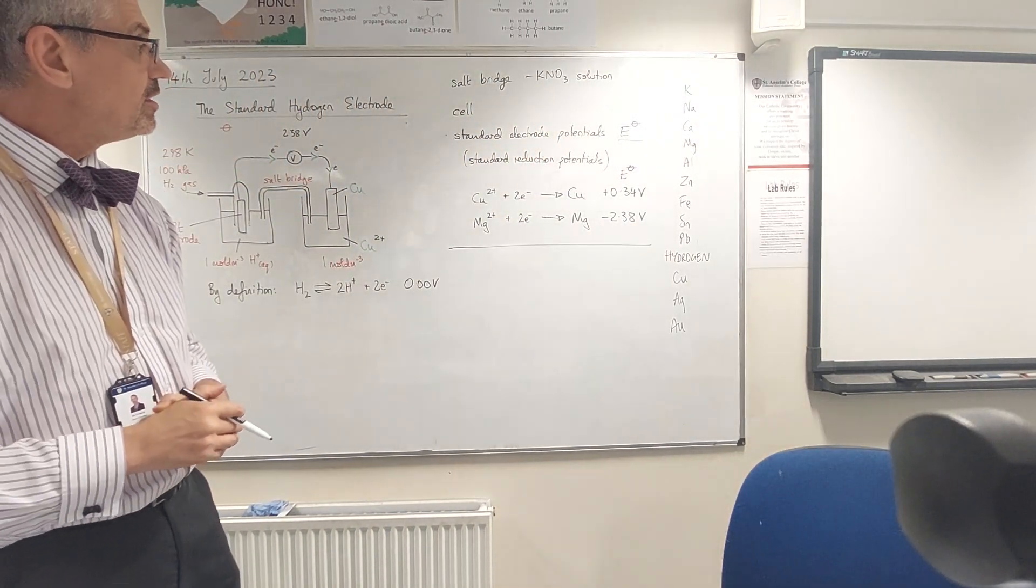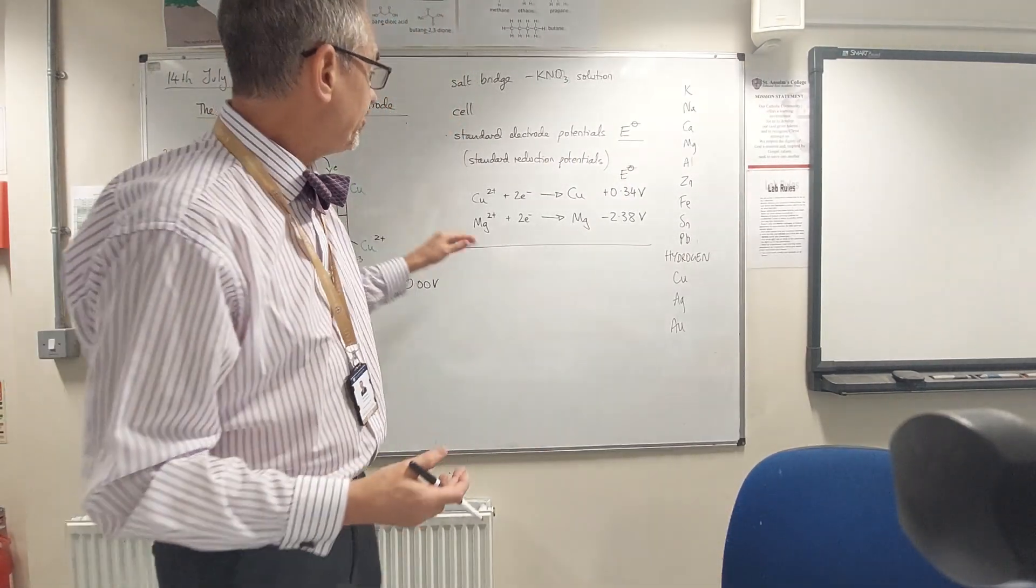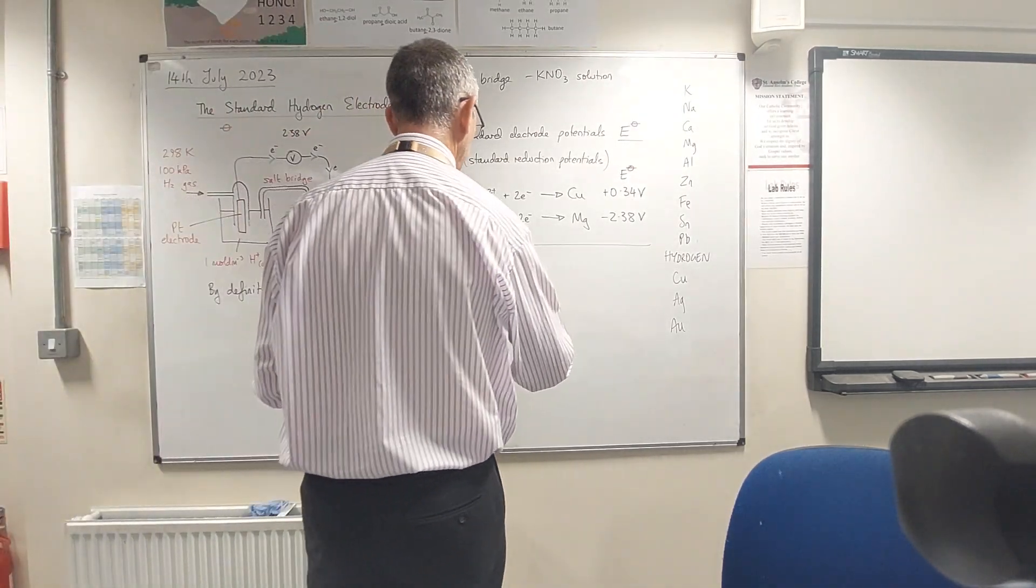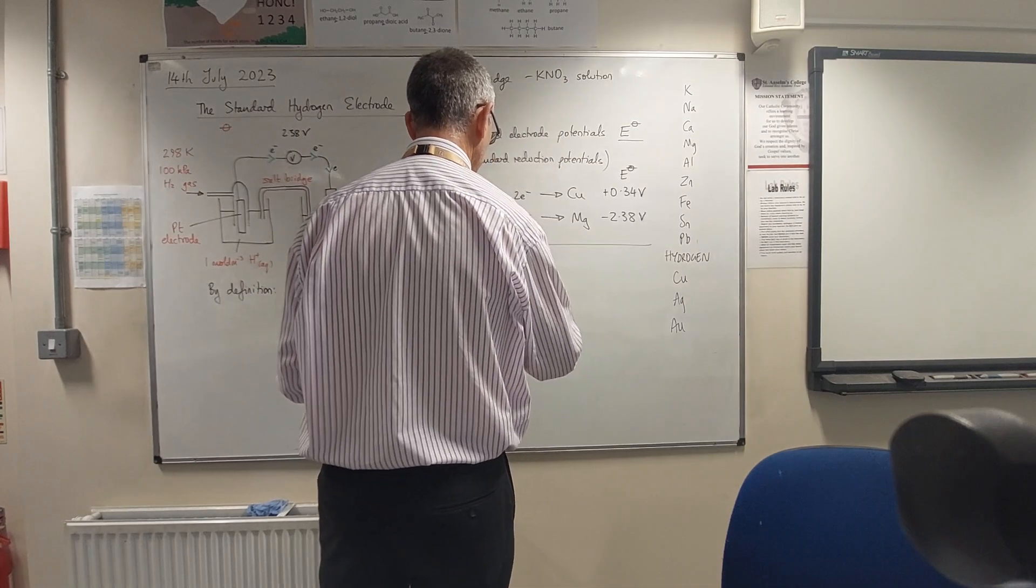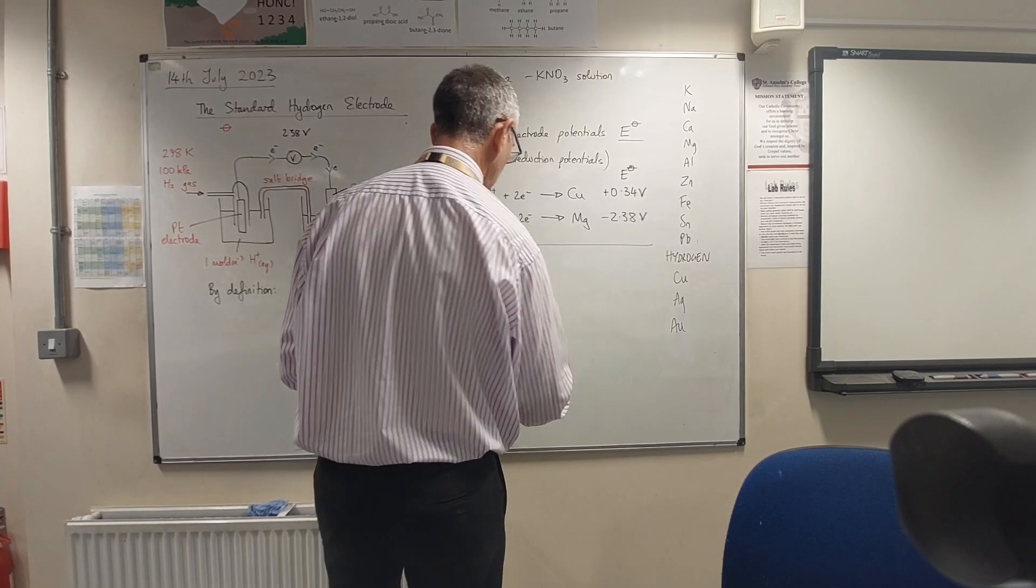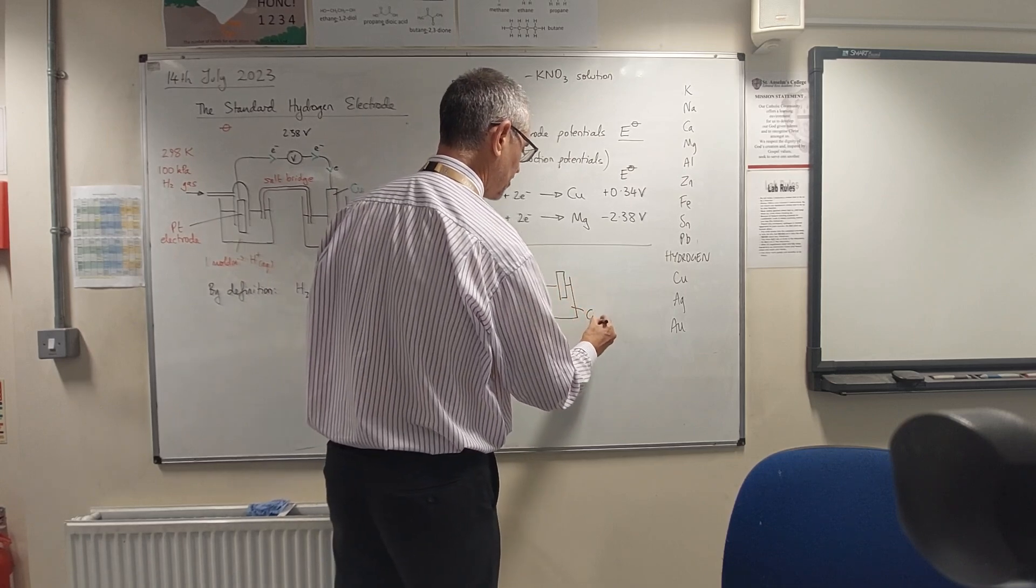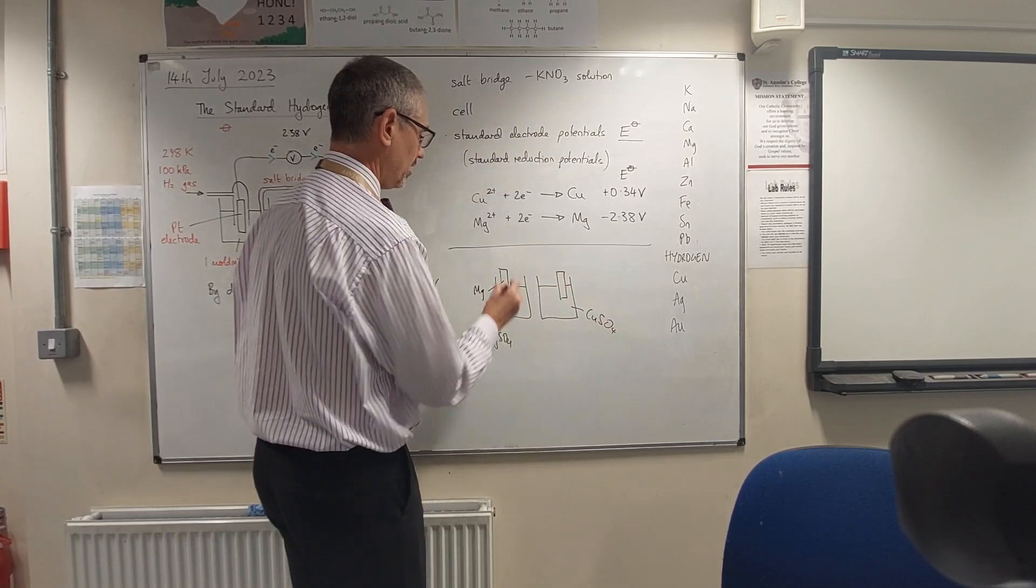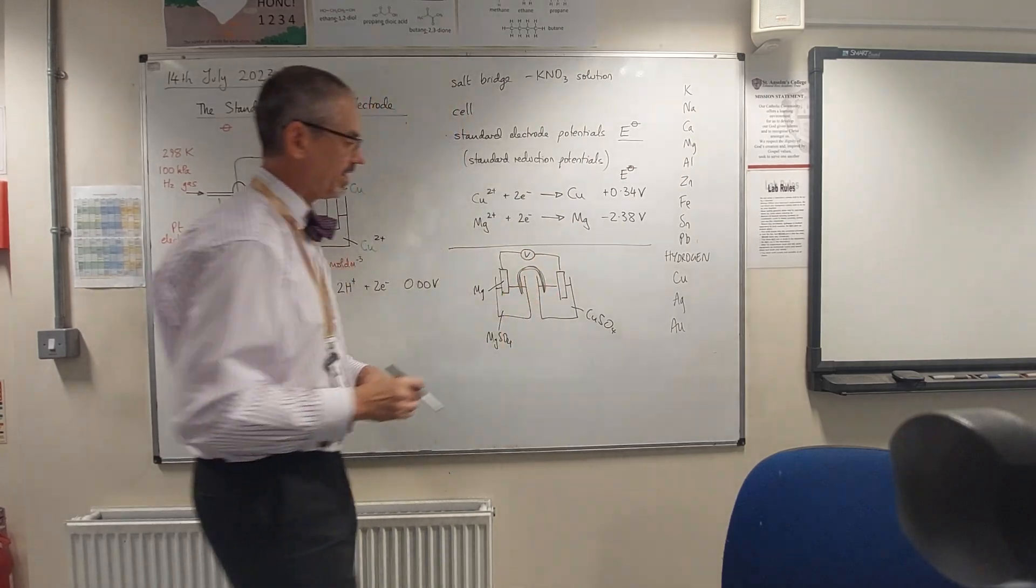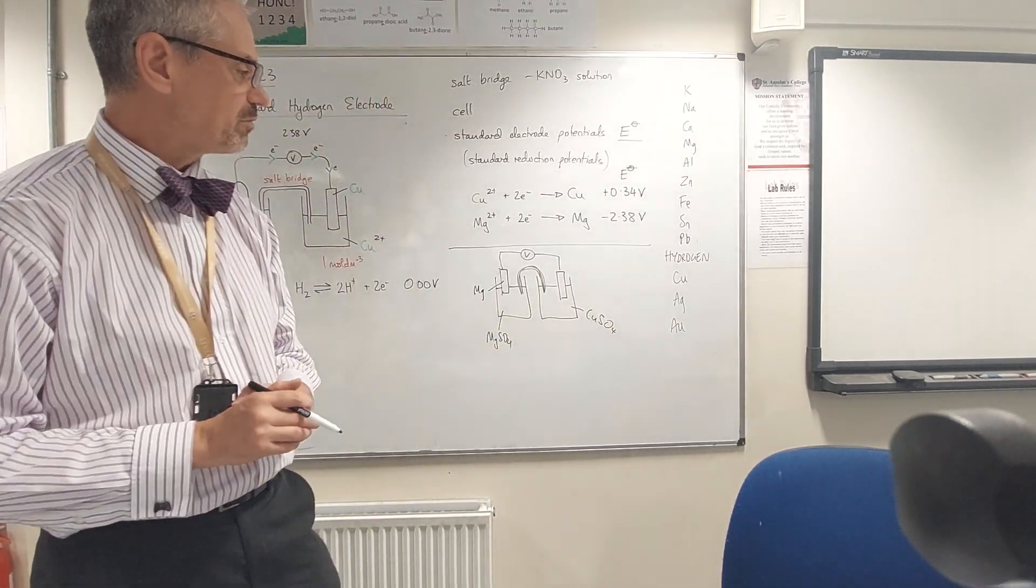Right, well how can I use these values? Let's imagine that I wanted to know what voltage I would get if I connected up a copper and a magnesium electrode together. So I would have a piece of magnesium in some magnesium solution here, and I have a piece of copper in some copper solution here. I connect those up to a voltmeter and I'd have my salt bridge going around there. What would happen? If this was under standard conditions, they're all one mole per dm cubed solutions and everything's working.